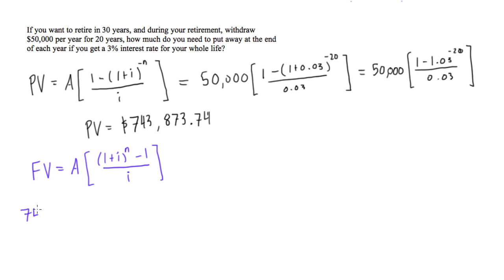We will write future value = $743,873.74 = A (this is going to be our annual investments or annuity that we're investing) times (1.03)^30 - now n is going to be 30 years in this case, you'll notice now we're looking at a 30-year time period where we're investing money, not that 20, that 20 years is irrelevant now - so we have 1.03 to the power of 30 minus 1 over 0.03.